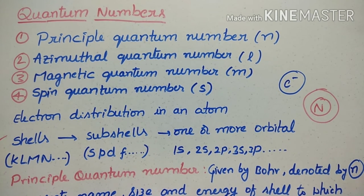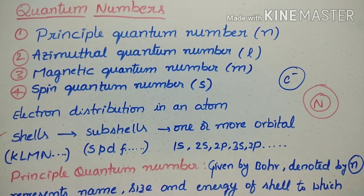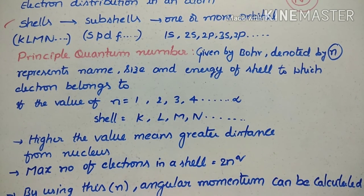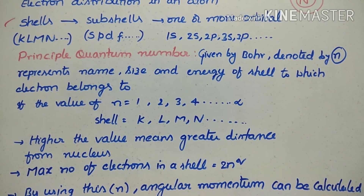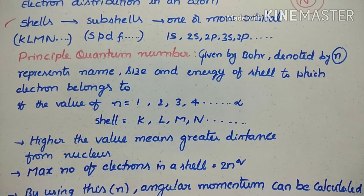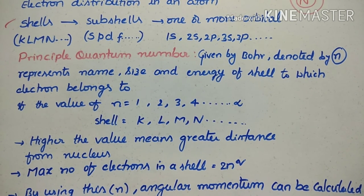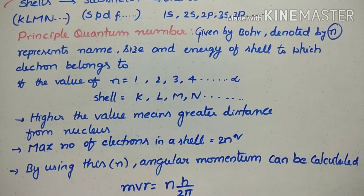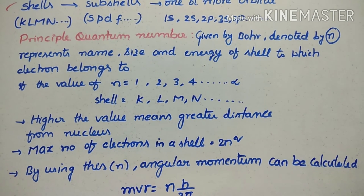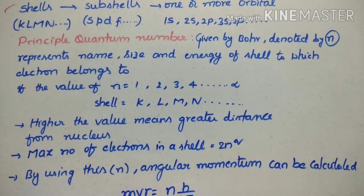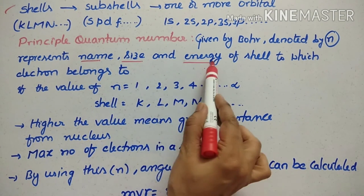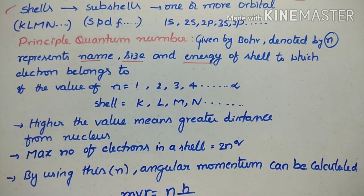The principal quantum number is denoted by 'n'. It represents the name, size, and energy of the shell to which the electron belongs.